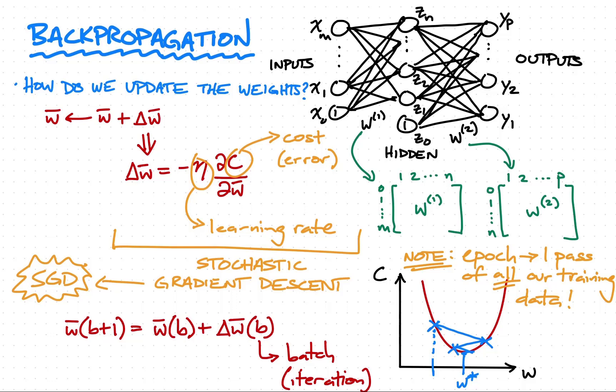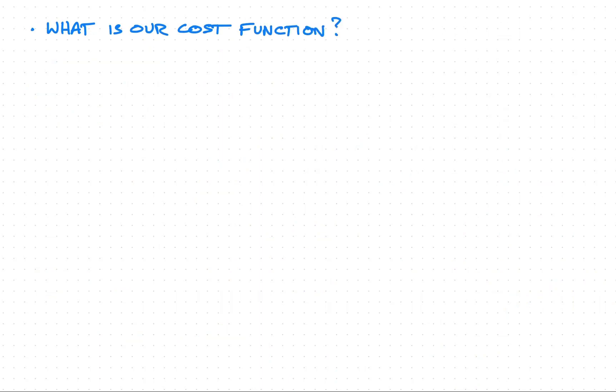Now that we know the high-level concepts of backpropagation using stochastic gradient descent, let's try to work out these equations mathematically. We need to answer another important question: what is C — what is the cost or the error of our network? There are many options, and backpropagation is still valid no matter what cost you use, as long as it's differentiable.